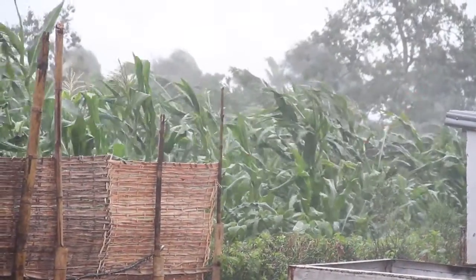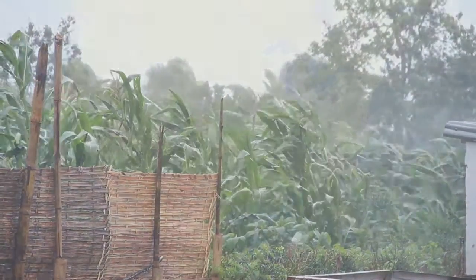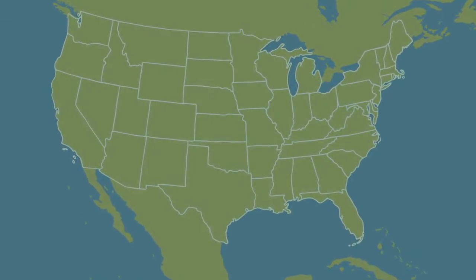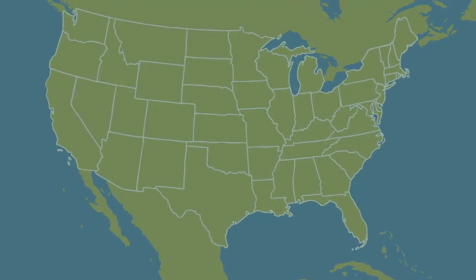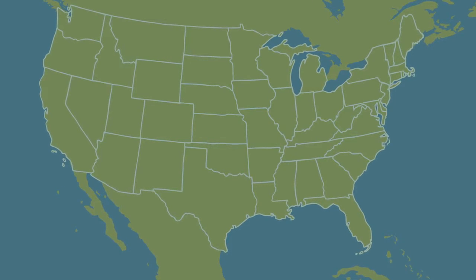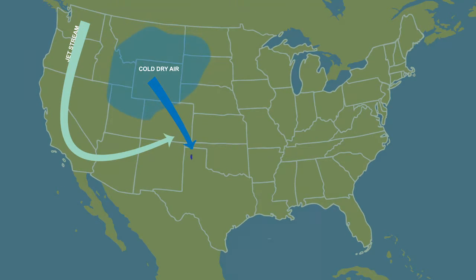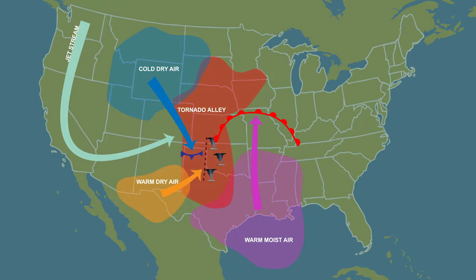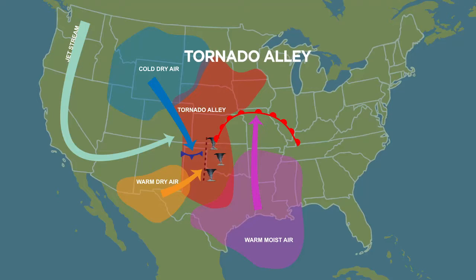Springtime brings the threat of dangerous thunderstorms and tornadoes over much of the United States. These strong storms occur as cold, dry air from Canada collides with warm, moist air from the Gulf of Mexico. These conditions most frequently happen across the Great Plains in a region of the country nicknamed Tornado Alley.